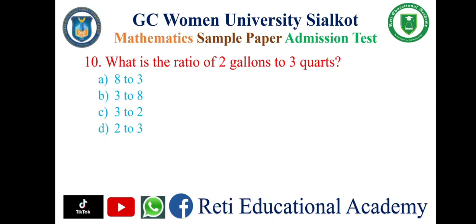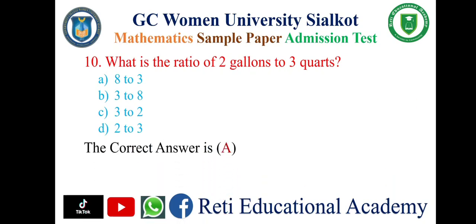Question number ten: What is the ratio of two gallons to three quarts? A: 8 to 3, B: 3 to 28, C: 3 to 2, D: 2 to 3. And the correct answer is A: 8 to 3.